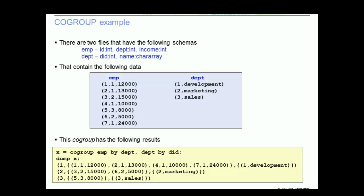The relation DEPT has two tuples: one with a value of 1, development, and the second with a value of 2, marketing.